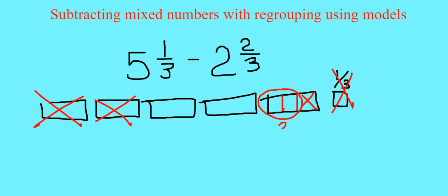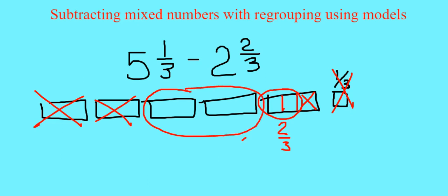But this time I'm also left with whole numbers — I still have 2 whole numbers. So I have 2 and 2/3 left. So 5 and 1/3 minus 2 and 2/3 is 2 and 2/3. Just remember to regroup that last whole number into whatever fraction you need in order to do your subtraction.